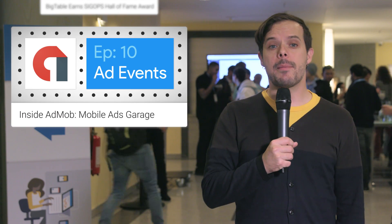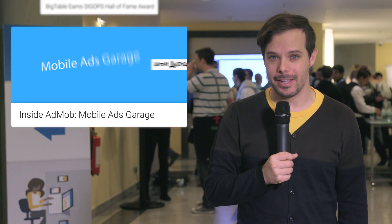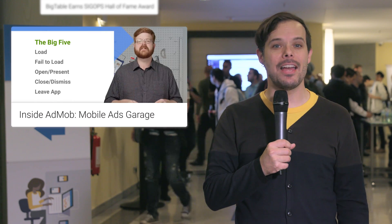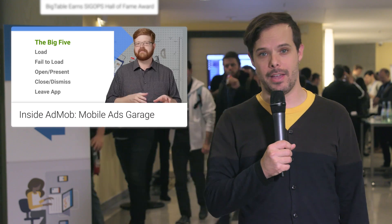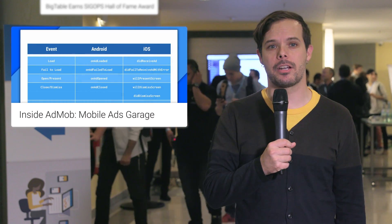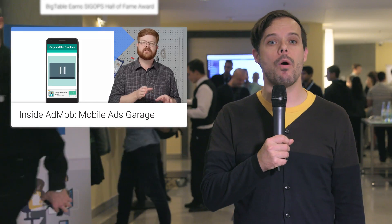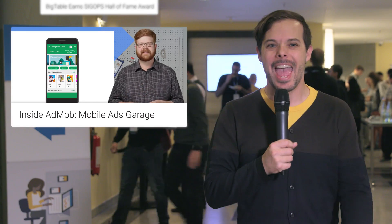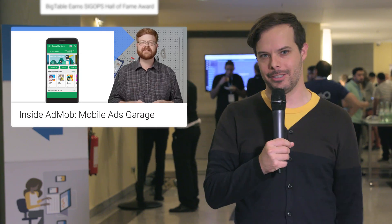The latest episode of the Mobile Ads Garage is all about ad events. Check it out to see how to tap into the ad lifecycle so your app's informed of loads, click-throughs, and other key events. You'll also get a detailed breakdown of the steps that occur in the life of an ad, info about which classes and callbacks to use for common tasks, and a real-world example of how to put it all together.